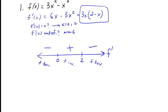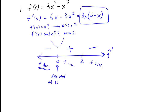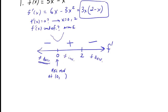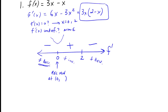That tells us the intervals of increase and decrease. It also tells us something important: as we approach zero, the function is decreasing, then after zero it starts increasing — so it's bottoming out, meaning there's a relative minimum at x equals zero. At x equals two, it's the opposite: the function was increasing before and decreasing after, so there's a relative maximum at x equals two.